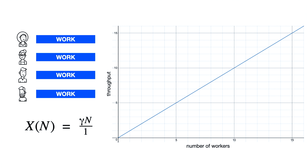This graph depicts the concept of linear scalability: the more workers we have, the faster we can accomplish the work. The function x of n is the throughput given n workers. Gamma in this case is equal to one. So five workers give us five throughput, and ten workers give us ten throughput.